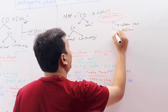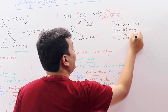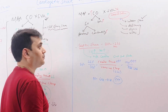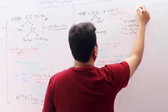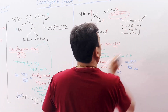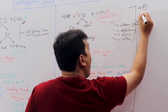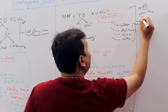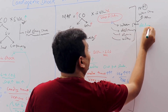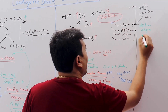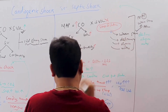Because of vasodilation in septic shock, the skin will be warm. The patient may also have delirium, oliguria, and mottling. So if a patient has increased pulse pressure, warm skin, increased heart rate, with possible delirium, oliguria, and mottling, this patient is having septic shock.